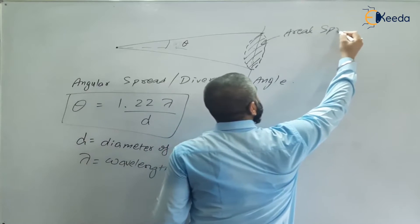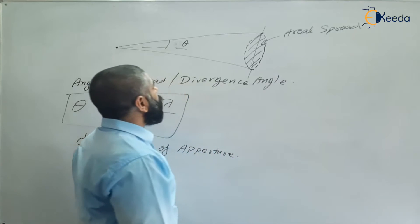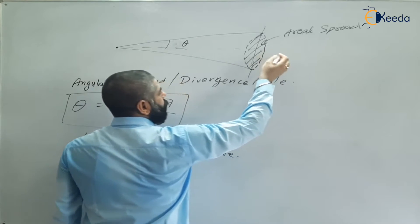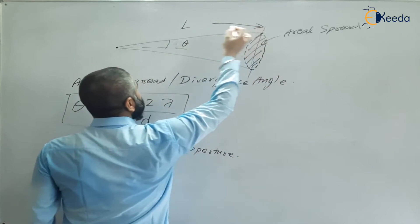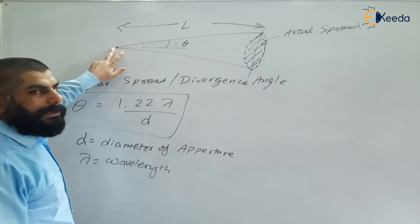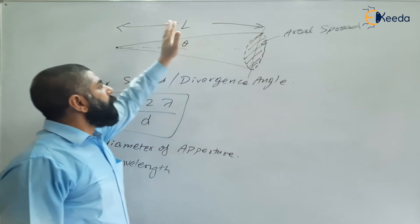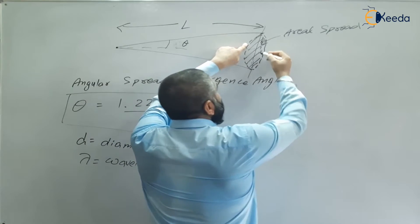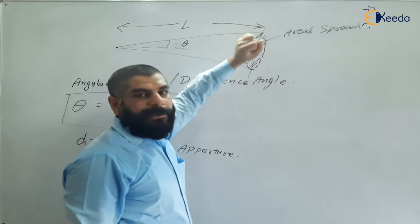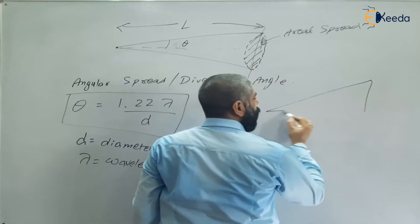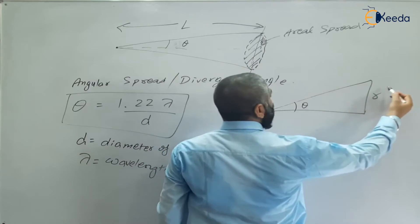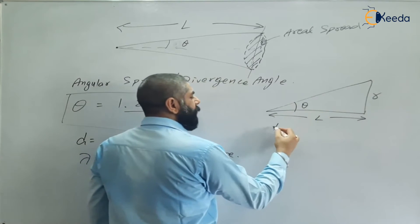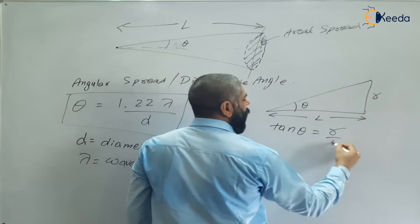This circular area is called the area spread. Now, consider a triangle where L is the distance of the object from the source. In this triangle, the angle is theta (θ), R is the radius of the circular spot, and L is the distance. Using trigonometry: tan θ = R/L.